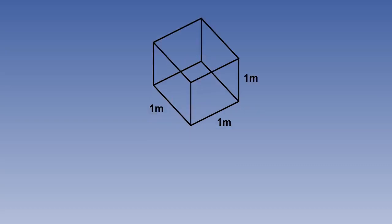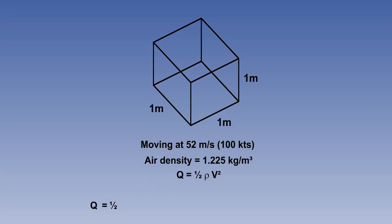Let us consider an air flow of 100 knots, which is 52 meters per second, at an isodensity of 1.225 kilos per cubic meter. Dynamic pressure is half rho v squared, that is 0.5 times 1.225 times 52 times 52, which equals 1656 newtons per square meter, or 16.56 hectopascals.